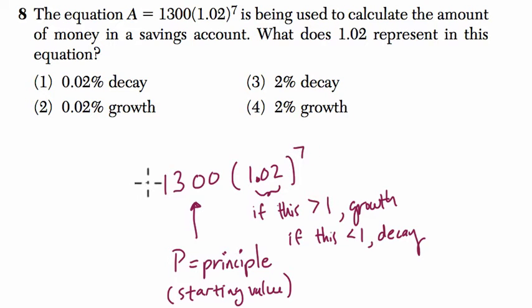We have A - A is the amount of money, the total amount of money. And 7, the exponent, usually refers to the time periods if you're dealing with a savings account.